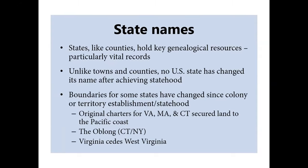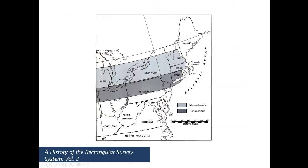Like counties, states hold key genealogical resources, particularly vital records. Unlike towns and counties, no US state has changed its name since achieving statehood. But boundaries for some states have changed since the colony or territory was established. The original charters for Virginia, Massachusetts, and Connecticut secured land from the Atlantic coast to the Pacific coast. A tract called the Oblong went back and forth between Connecticut and New York throughout the 18th century. At the time of the Civil War, Virginia ceded its western half and the new state of West Virginia was created.